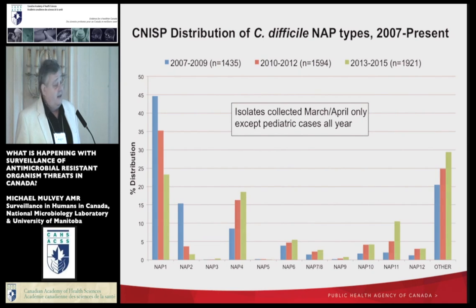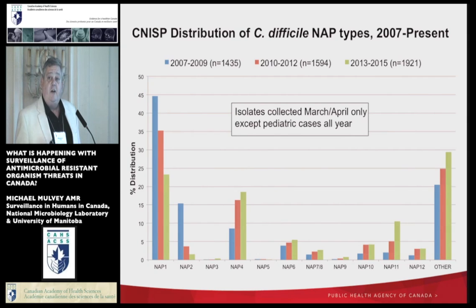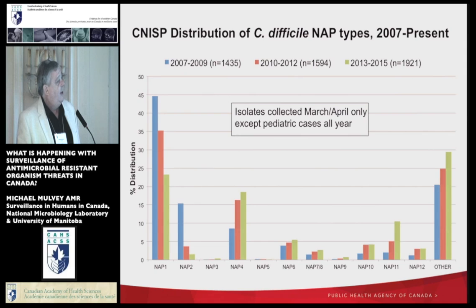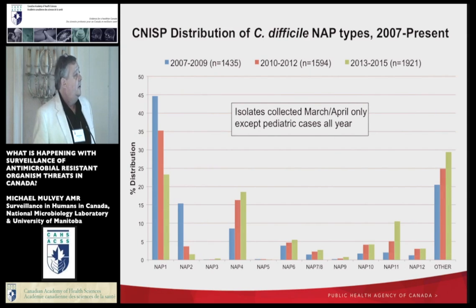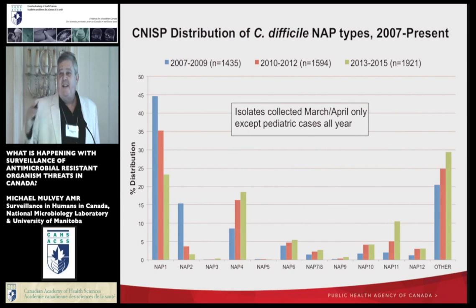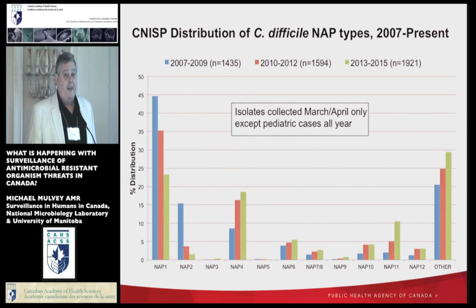Another good story with C. difficile is a decrease in some of the virulent strains. The organisms are called NAP — North American pulsotypes. NAP1 was the virulent strain that started in Quebec and caused large outbreaks in the early 2000s — there were almost 2,000 deaths attributed to that outbreak. On a positive side, we're seeing a decrease in the proportion of NAP1s, but they're being replaced by other NAP types that appear so far to be less virulent. When we see things disappearing, it's just as important to understand why they're going away so we can learn from that.